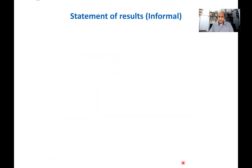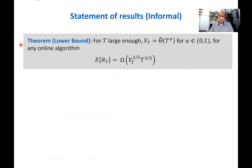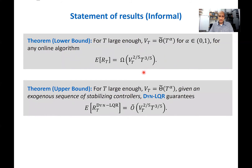On this slide, let me give a brief review of the main results of our paper, somewhat informally stated. The first theorem we proved is a lower bound on the regret. We prove that for large enough time horizon T and sublinear variation in input parameters, no online algorithm can guarantee a regret smaller than variation to the two-fifths times time horizon to the three-fifths. In other words, for any online algorithm for learning and controlling a non-stationary LQR, there is some distribution over instances such that the expected regret is at least variation^(2/5) · T^(3/5). Our main contribution is a matching upper bound: we exhibit algorithm Dynamic LQR, which matches the lower bound and is thus minimax optimal.